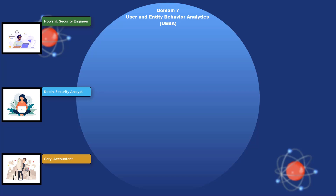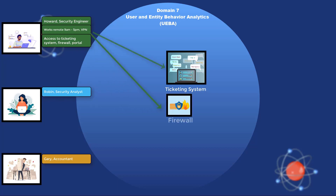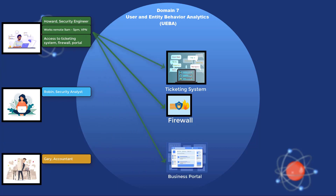Here are Howard's daily duties. He works remotely at home and logs on at 9am to the corporate office network via VPN. He then signs into the ticket software, assigns himself some technical troubleshooting issues, and logs into only the firewalls to check out network traffic and configure policies, updates customers about their issues in the business portal, and answers any other correspondence. Howard usually takes lunch from noon to 1pm, attends a team meeting from 1pm to 2pm, then works until 5pm, end of business day.